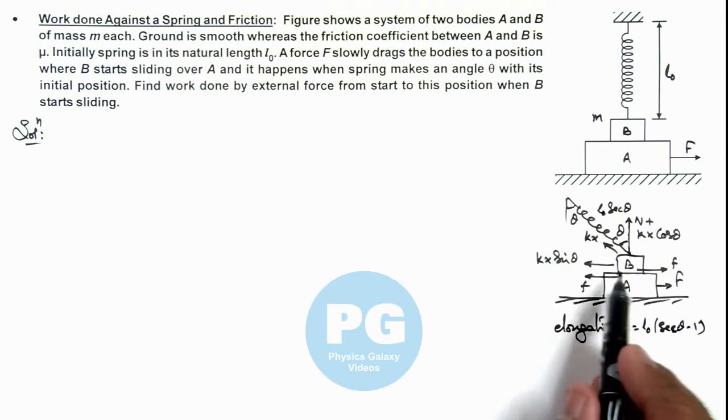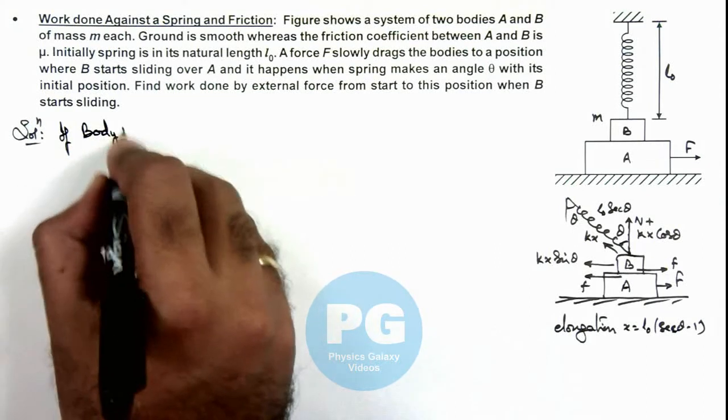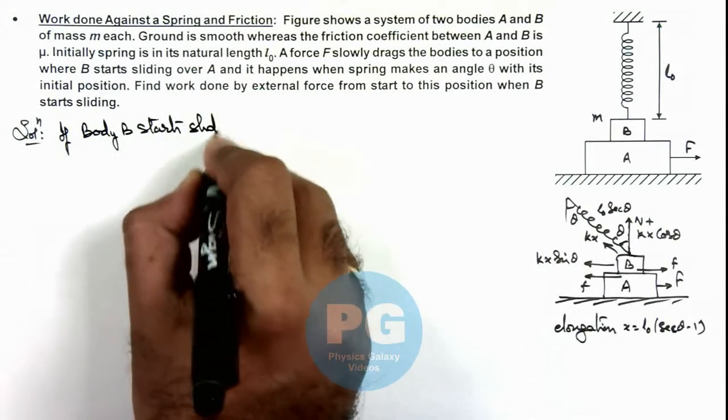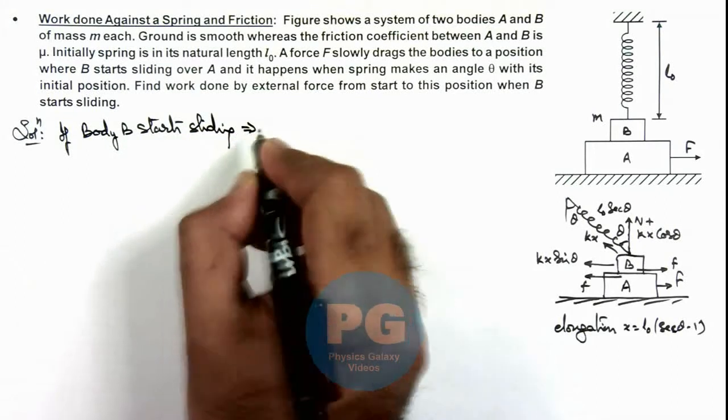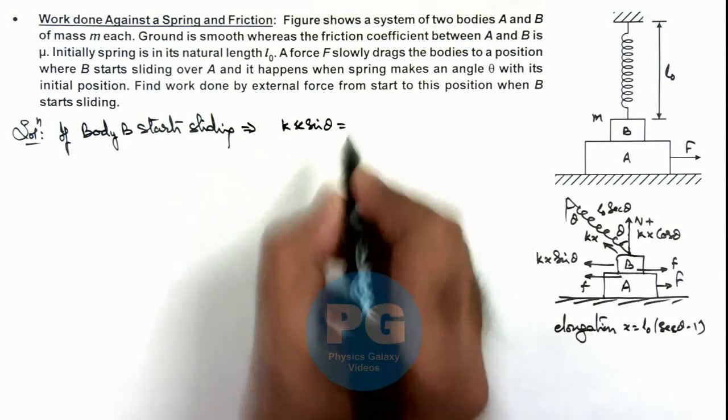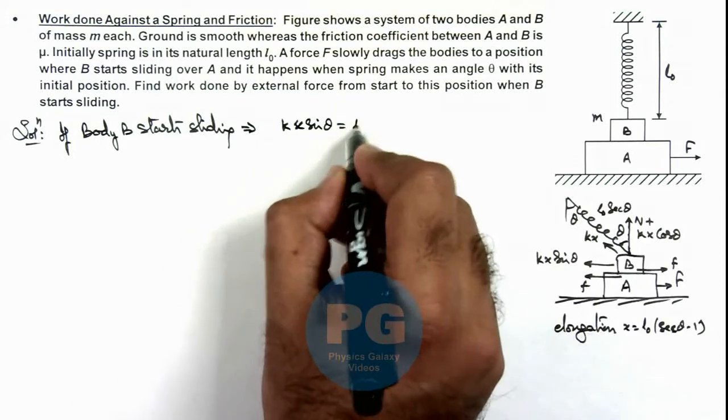Now in this situation, we can say if body B starts sliding, this implies kx sin θ acting on it toward left is balancing the limiting value of friction, which is μ times N.